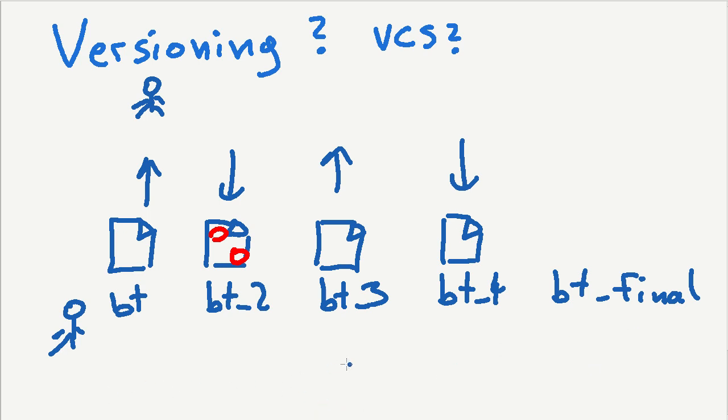So this already is versioning just in a very simple way, right? You have in the end, you have basically forgot the last file, right? So this is basically the same file. In the end, you have five different files, right?